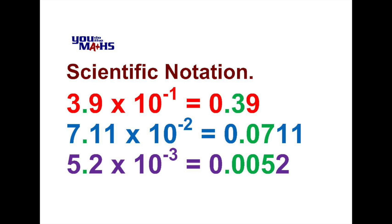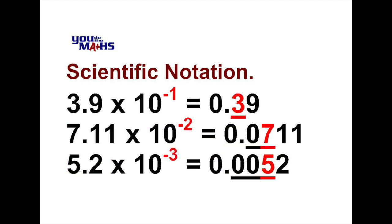We can also see that in each case the first non-zero digit, the 3, the 7, and the 5 displayed in red, are in the position which reflects the power of 10. So the 3 is in the first decimal place, the 7 is in the second decimal place, and the 5 is in the third decimal place.